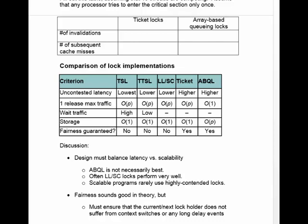Storage for all the different approaches is order-one, except for array-based queuing locks, where you need on the order of the same number of cache blocks as there are processes. Ticket and array-based queuing locks have the property that they ensure fairness — a thread that's been waiting longer will definitely get into its critical section before one that just started waiting more recently. None of the other strategies have that property.